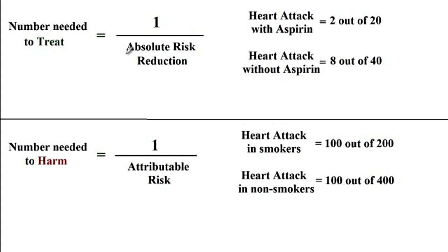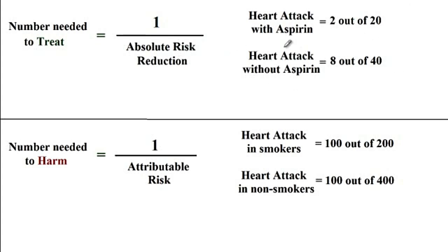To calculate the number needed to treat, you divide 1 by the attributable risk reduction. The attributable risk reduction is the percentage reduction in risk after a patient has been treated with a favorable agent — whether it's aspirin, exercise, or any other risk-reducing factor.